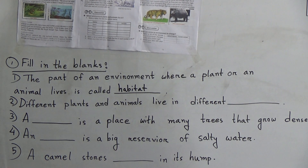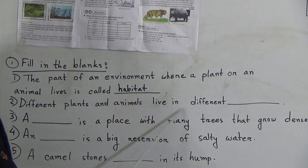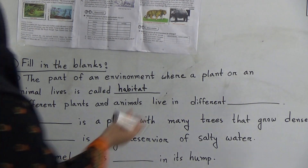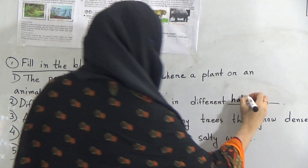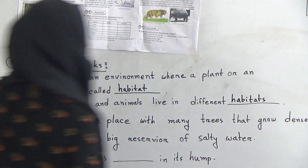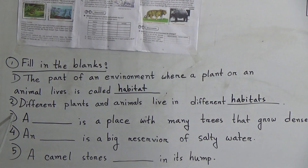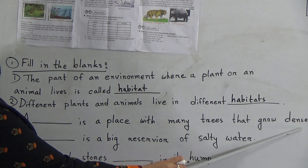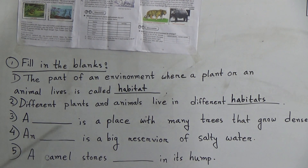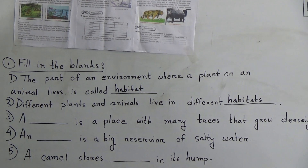Number two: different plants and animals live in different — the answer is habitats. Number three: a dash is a place with many trees that grow densely — the answer is forest.